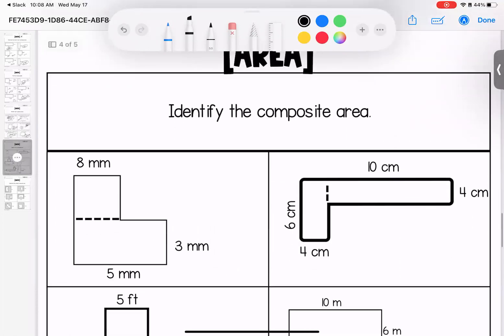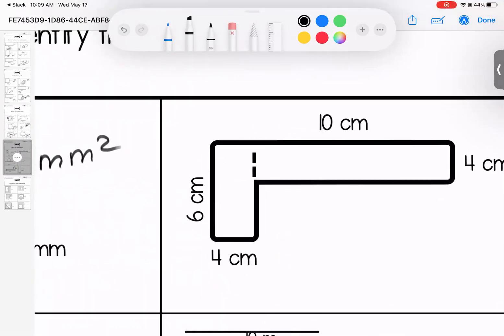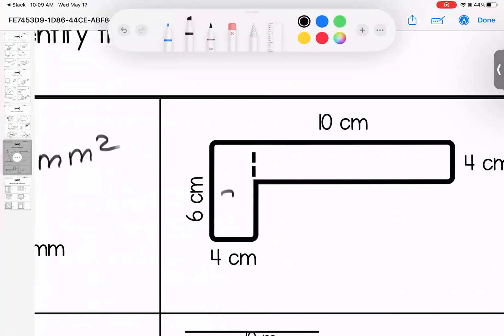This time I put some shapes together, so we had to use what we know. We have a square which is 8 and 8 is 64. This is 5 and 3 is 15. So if we add our two pieces together, our total is 79 millimeters squared. Over here, 6 and 4 is 24, 10 and 4 is 40. Add them together, 64 centimeters squared.